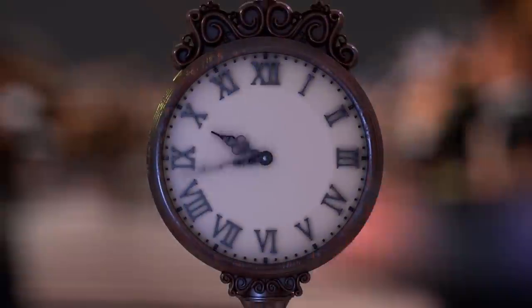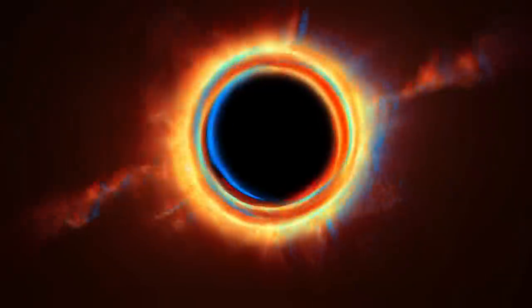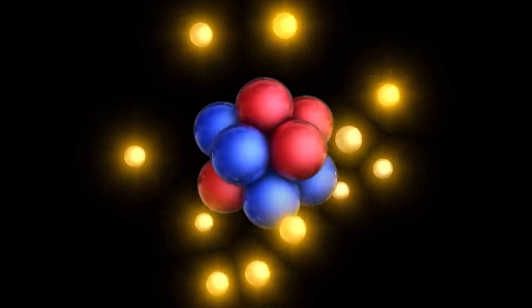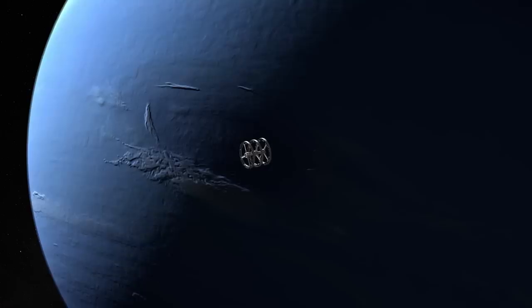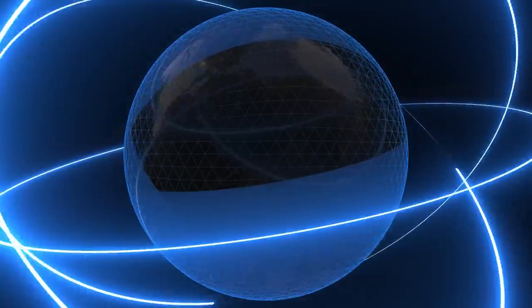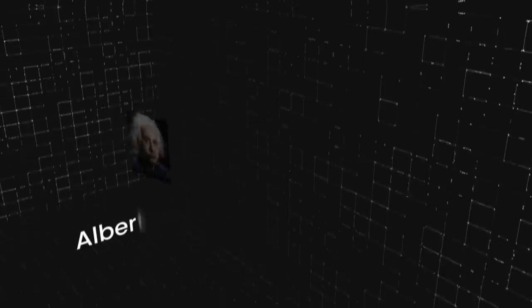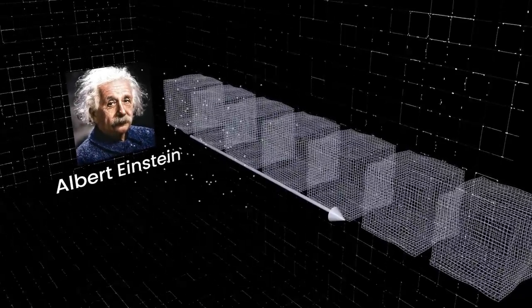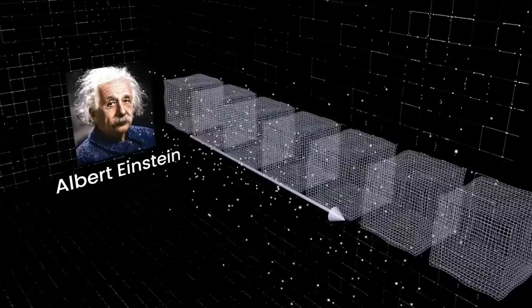General relativity does a good job describing things on a very large scale, and quantum mechanics can give us a good understanding of how the world works on a tiny scale. But these two theories don't work well together, and they often contradict each other. Albert Einstein managed to unify space, time, and gravity. But the other forces of nature were missing to finally connect all these under one framework.